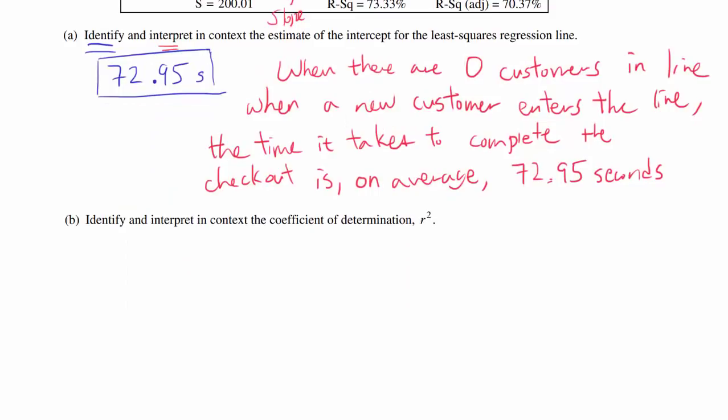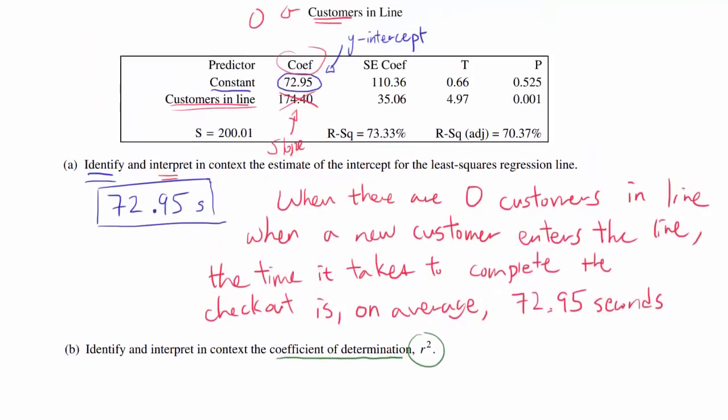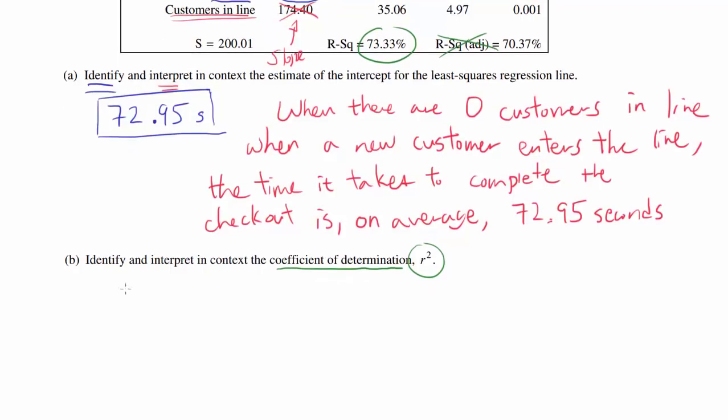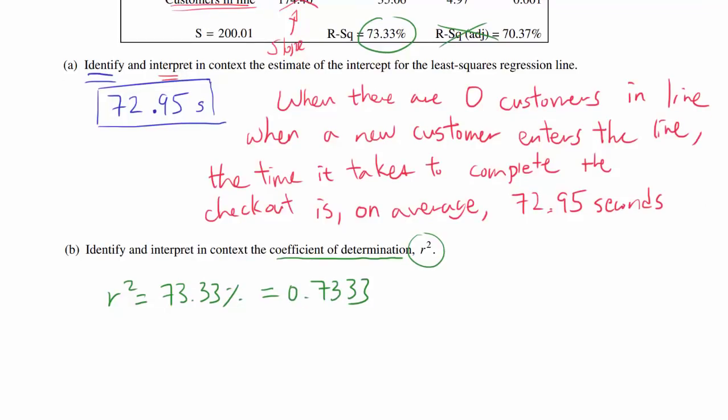Let's go on to part B. Identify and interpret in context the coefficient of determination, R squared. And where is our coefficient of determination? Here it is. I believe for the AP statistics test, you are not using the adjusted coefficient of determination. Just use the regular one. So we know our R squared is 73.33% or 0.7333. And what's the meaning of this?